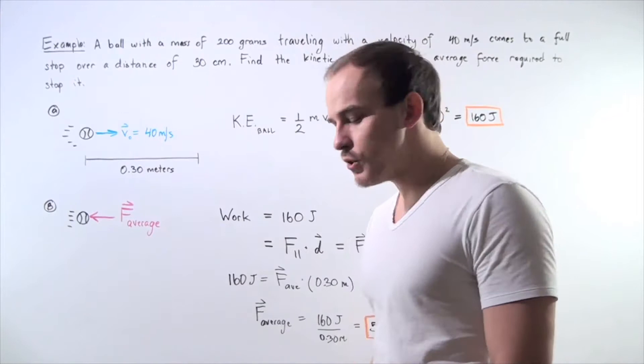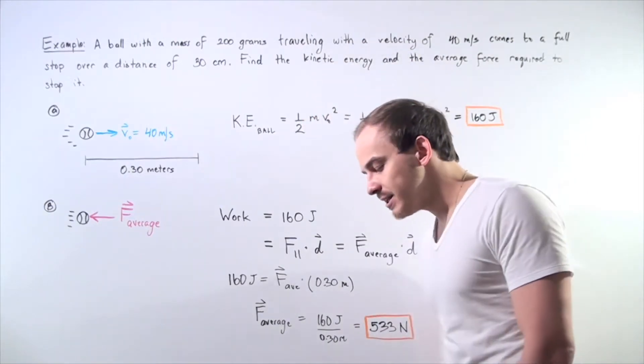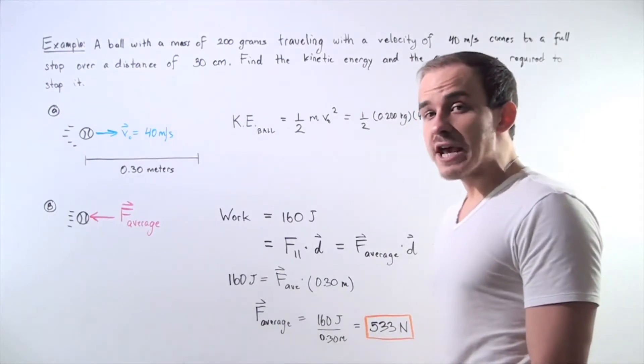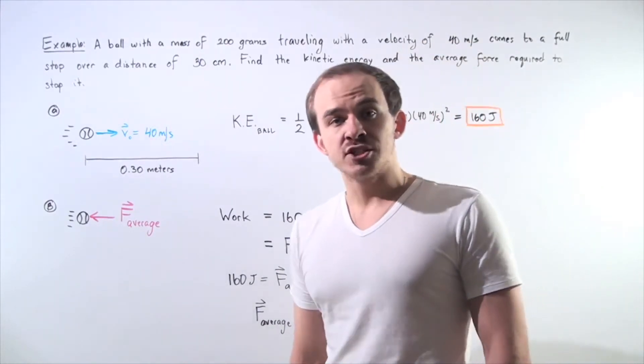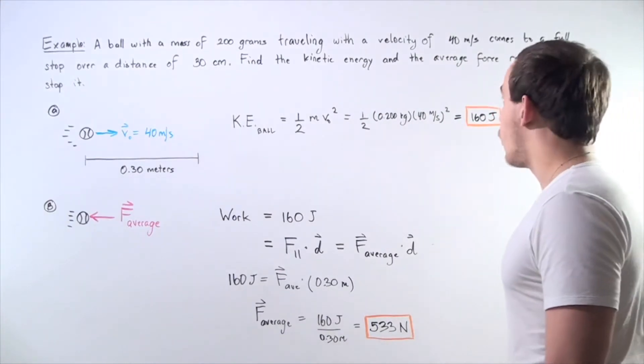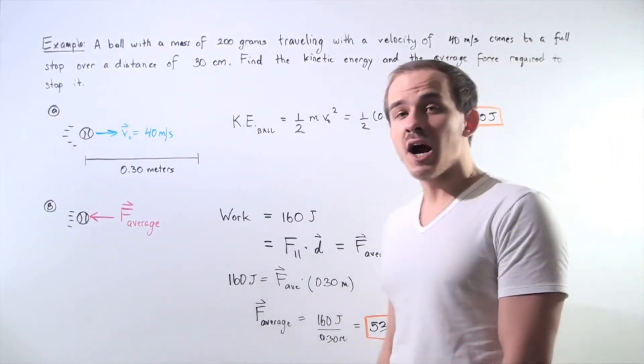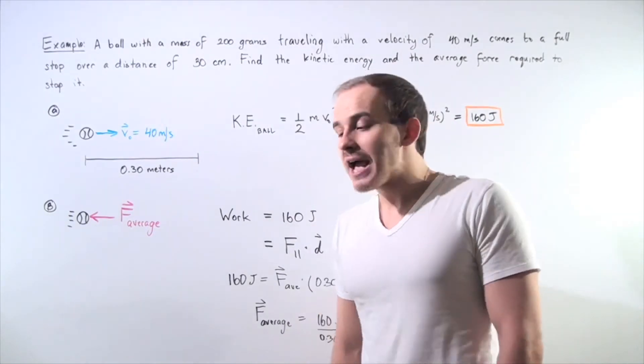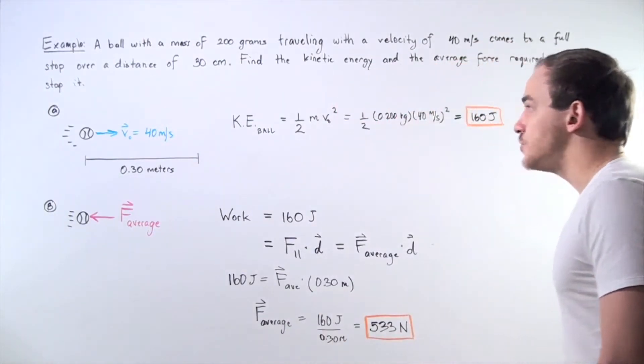We want to find two things. We want to calculate the initial kinetic energy of the object and the average net force acting on the object to stop it. Now the reason we're asking for the average force and not the force is because our force is non-constant. It varies. So we want to find the average net force.